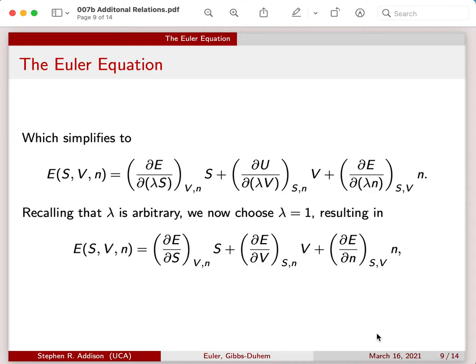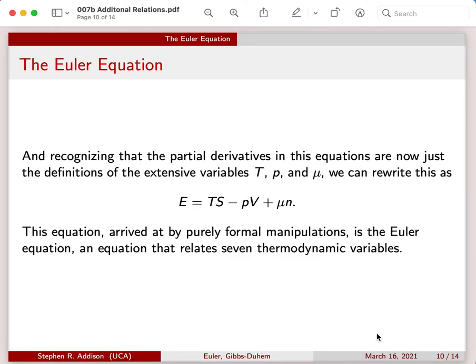And you might notice that all of those partial derivatives now are quantities that we've seen before. In fact, the three partial derivatives are related to temperature, pressure, and chemical potential. And we have to insert the correct signs, and in fact, the correct sign on the middle term on the right-hand side. But that gives us a much simpler expression when we use those definitions. Inserting those definitions, we get a relationship that involves seven variables.